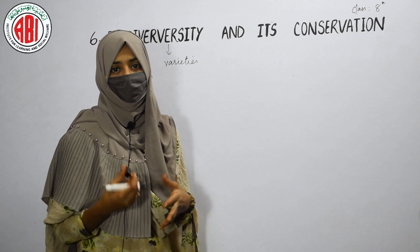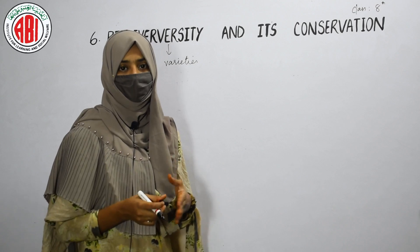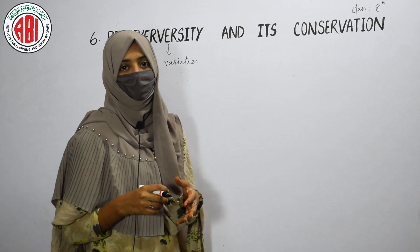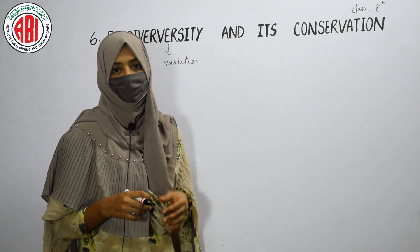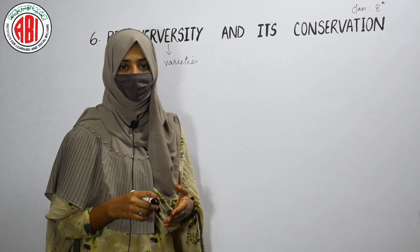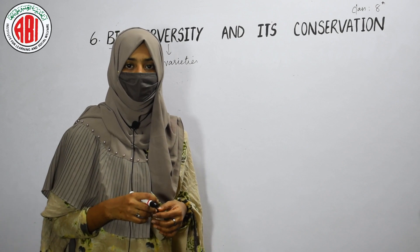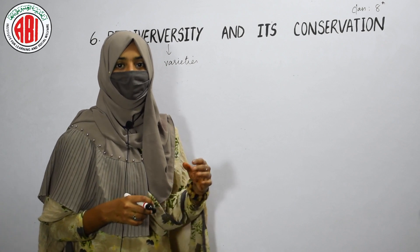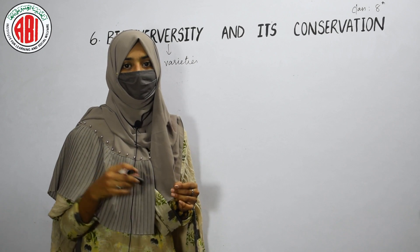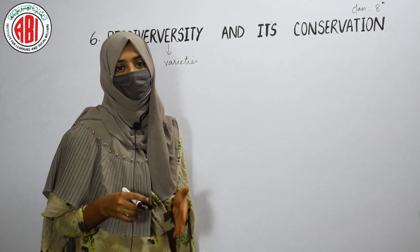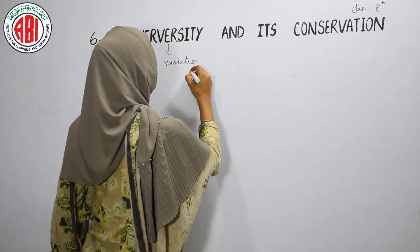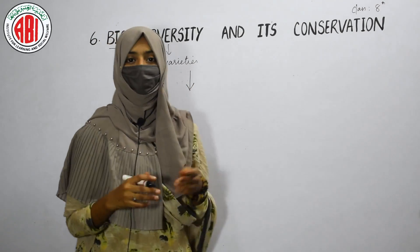Biodiversity in nature is a gradual process — it occurs naturally. These varieties of different kinds of living organisms that exist in nature help nature in various ways and balance all the ecosystems. But due to human interventions and certain human activities, this biodiversity is getting depleted — the varieties of living organisms are decreasing day by day.